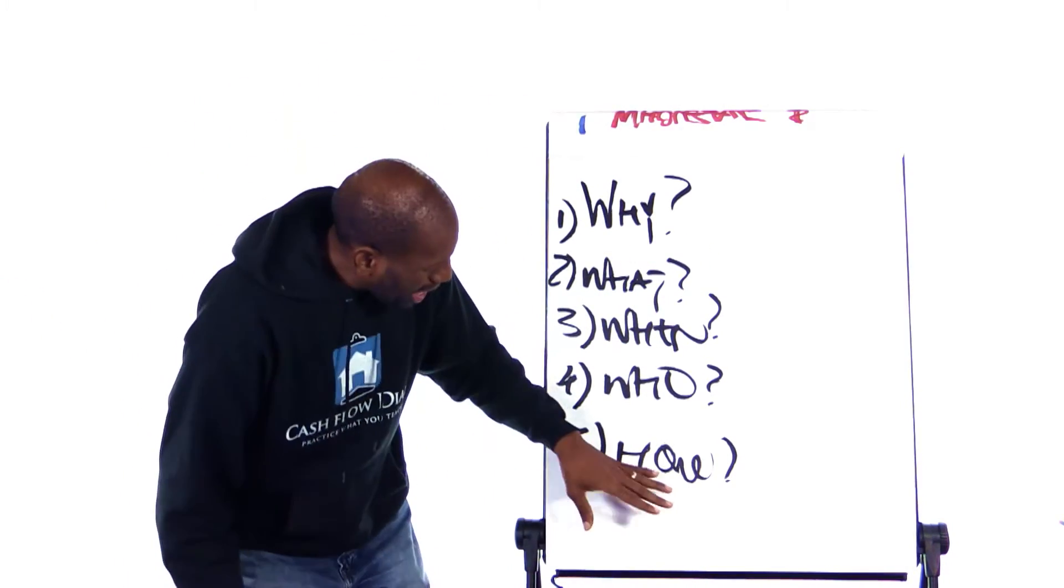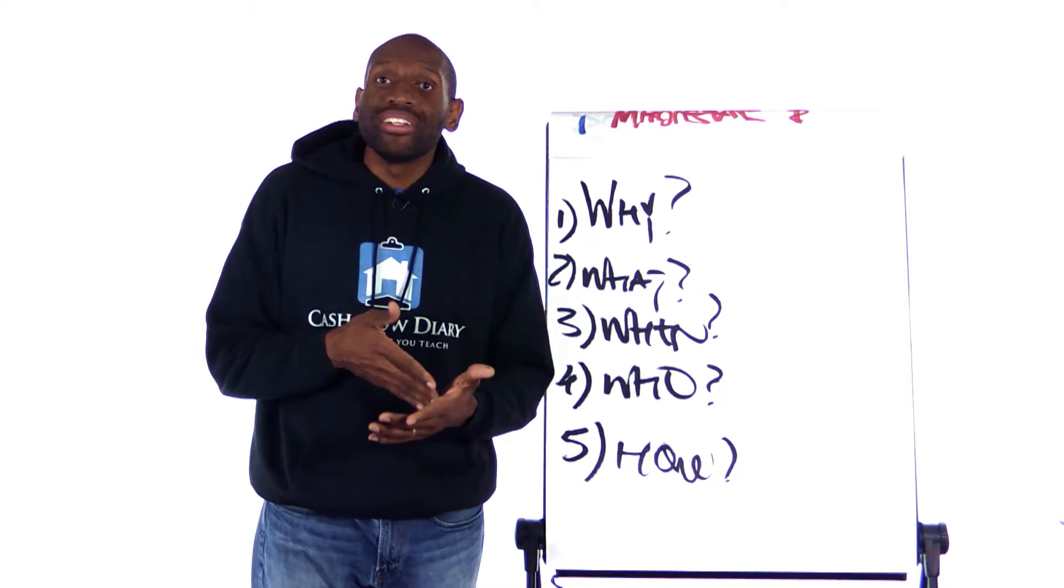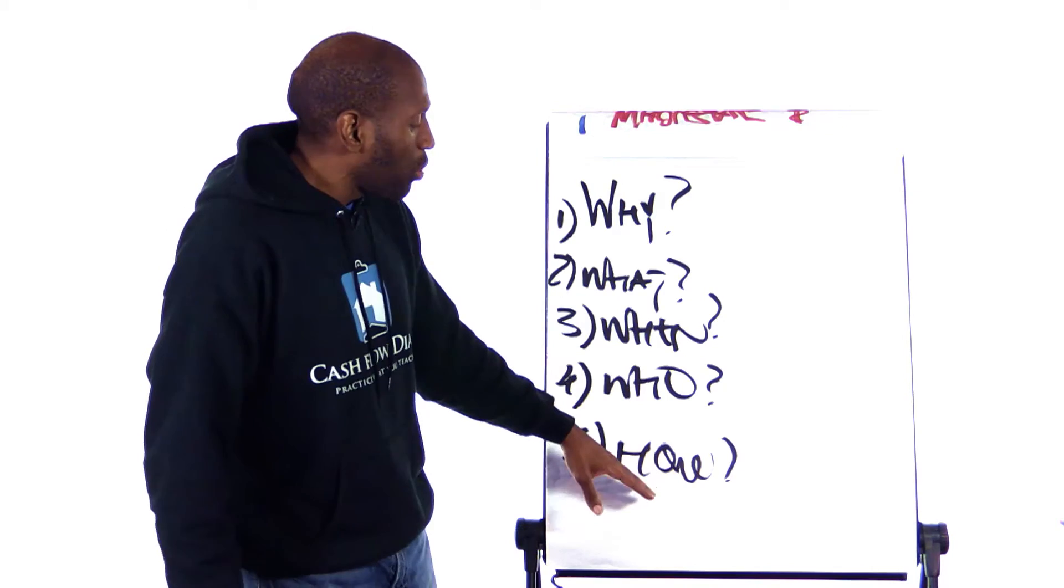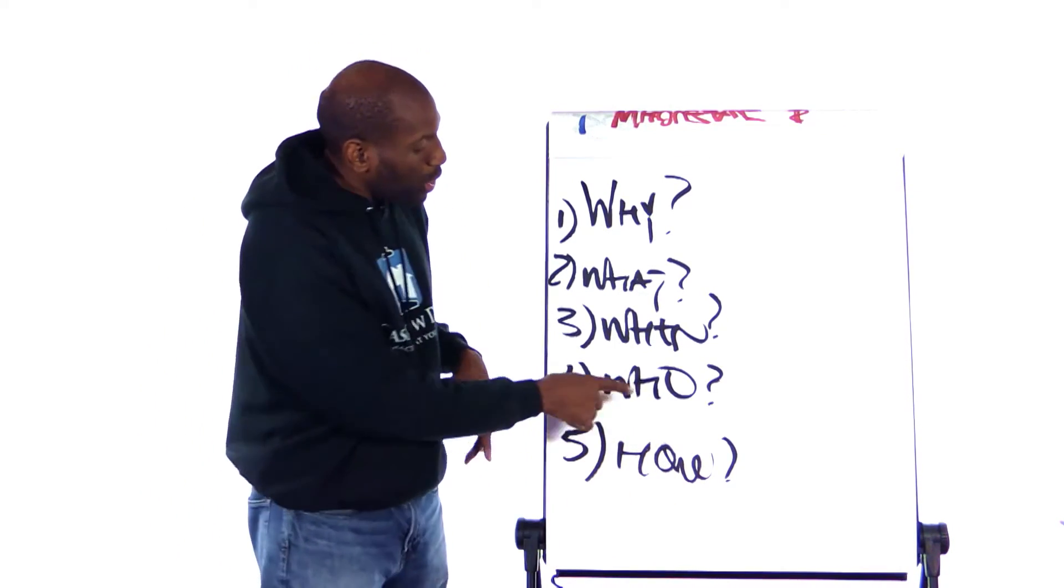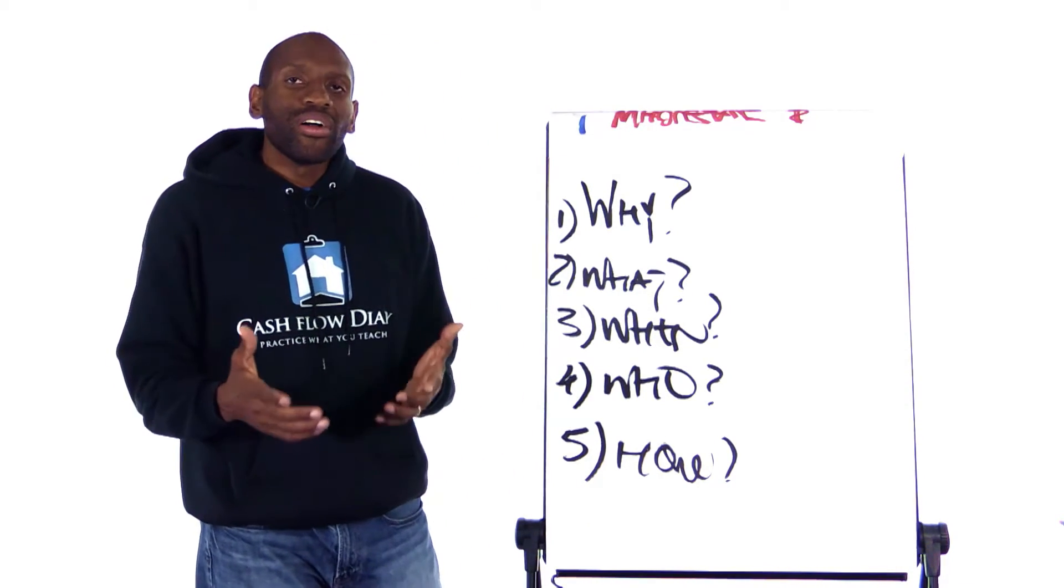We start way down here and we start searching for information that we don't need and don't even have the ability to use yet. And we start with how. And then we think we have to do it. I don't know how to do it. How am I going to do that?